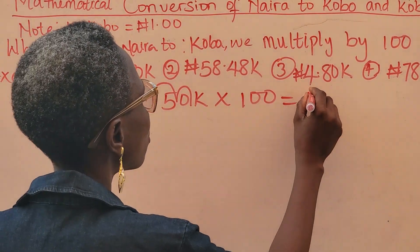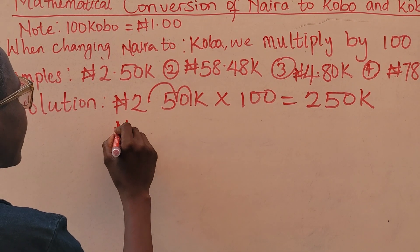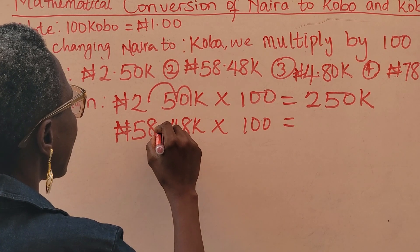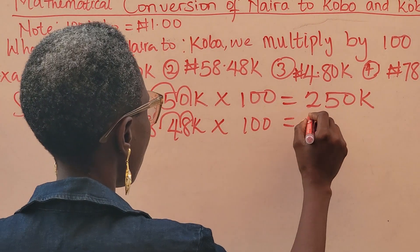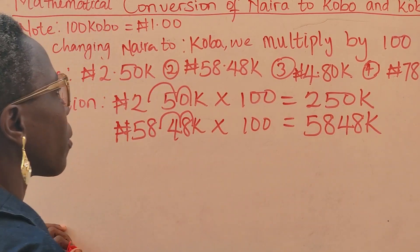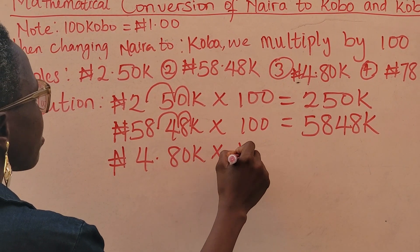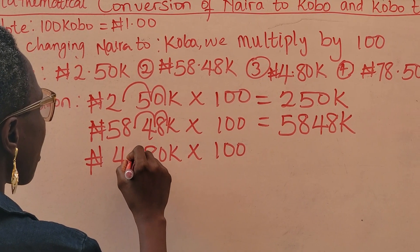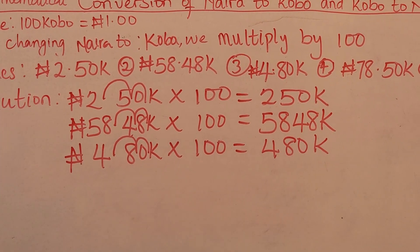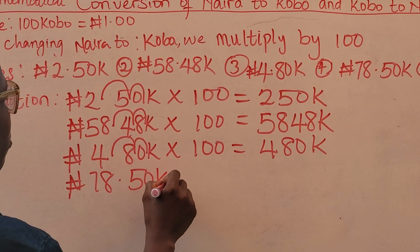Let's go through the solutions. First: 2 naira 50 kobo multiplied by 100 — move the decimal point forward — that becomes 250 kobo. Next: 58 naira 48 kobo times 100 — move the decimal point forward — that gives 5848 kobo.